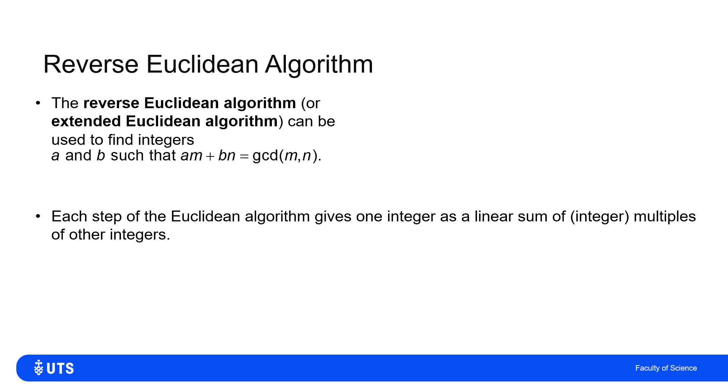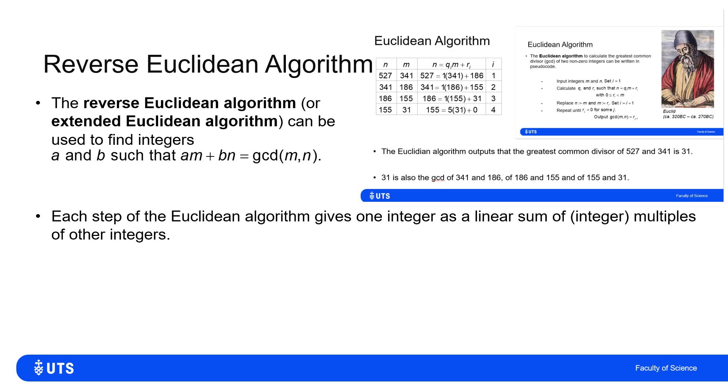Each step of the Euclidean algorithm gives us one integer as a linear sum of the others. This is your slide quoting a slide quoting a slide. What we worked out was the greatest common divisor of in this case 527 and 341 and showed that that was 31.